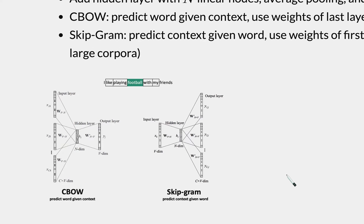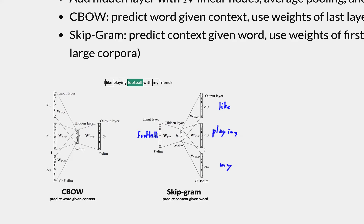Skip-gram works in the exact opposite way. In this case, our input is the center word — 'football' — and we have to predict the context words, like 'I', 'like', 'playing', 'with', 'my'. It's completely analogous otherwise: inputs are 10,000-dimensional one-hot vectors, with a hidden layer in between.